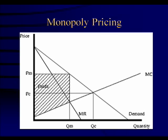Here's a graph on monopoly pricing, which is familiar to anyone who has taken a basic microeconomics course. It shows that monopolies tend to produce less than is optimum and charge more, producing a monopoly surplus, which is the shaded rectangle shown in the graph.